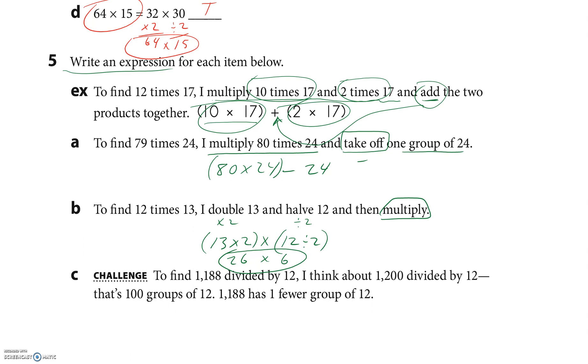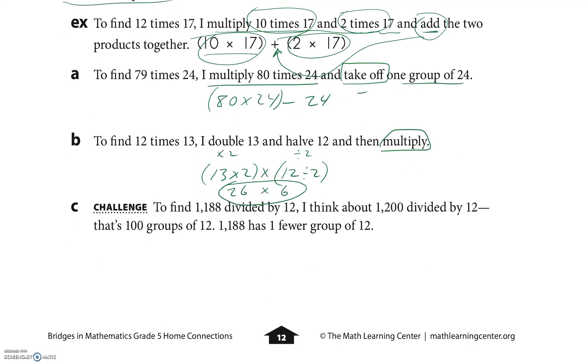I really hope you pause it here if you want to try the challenge. I really like this one. To find 1188 divided by 12, this person thinks about 1200 divided by 12. Think about that: 1200 divided by 12. There's two extra zeros there, and they say it's a hundred groups of 12 is a hundred. So if I do 1200 divided by 12, that's a hundred, but they said it's one fewer group, so all I'm gonna do is take away one.